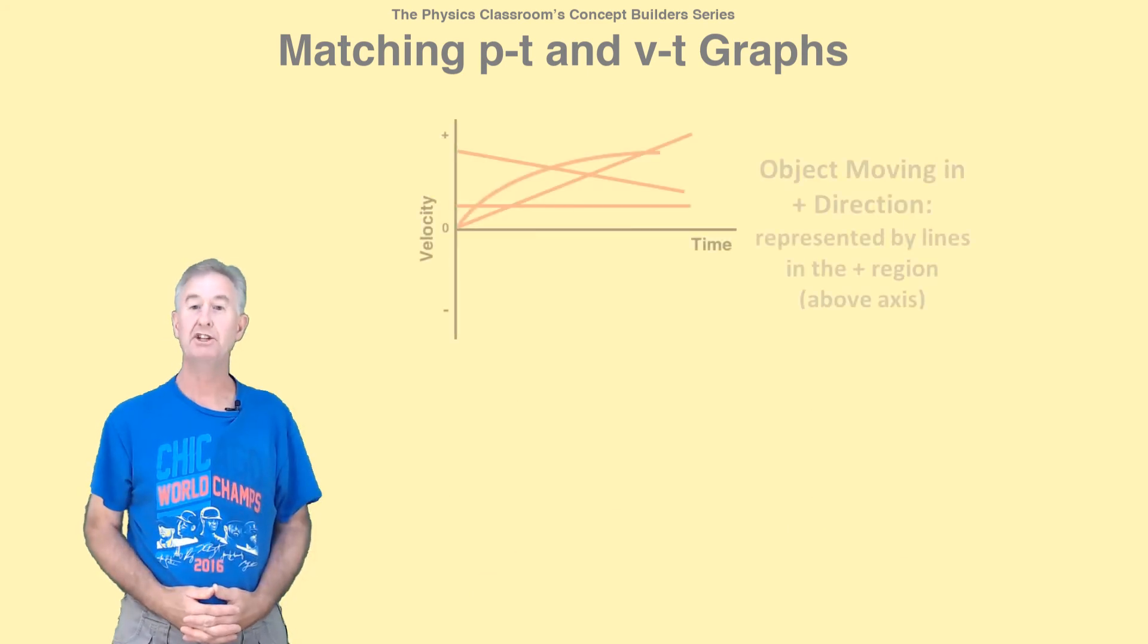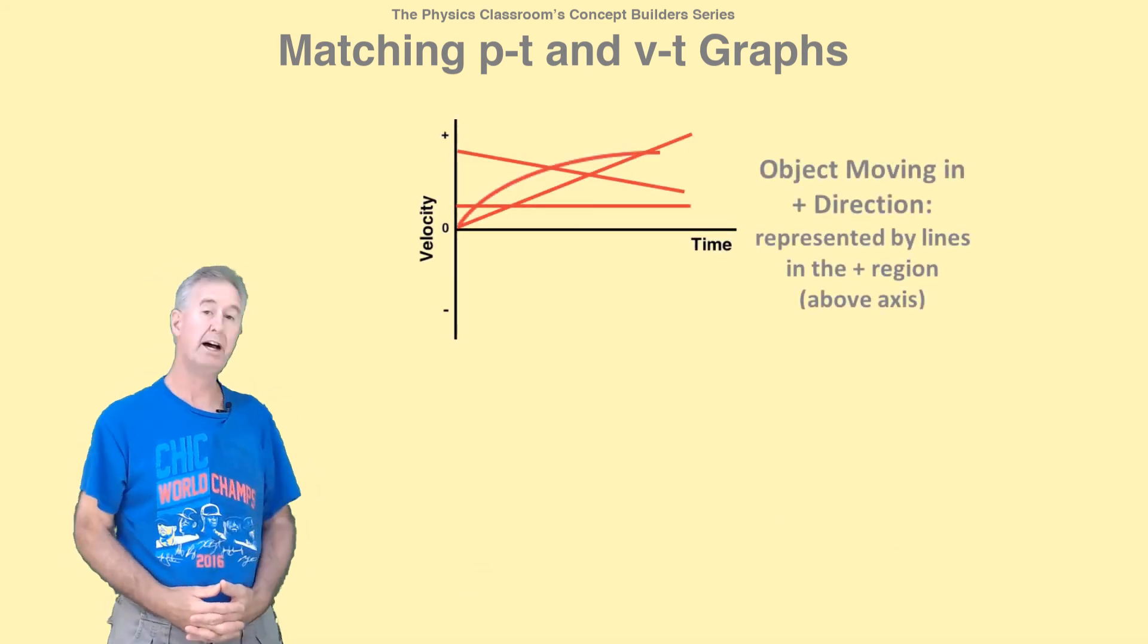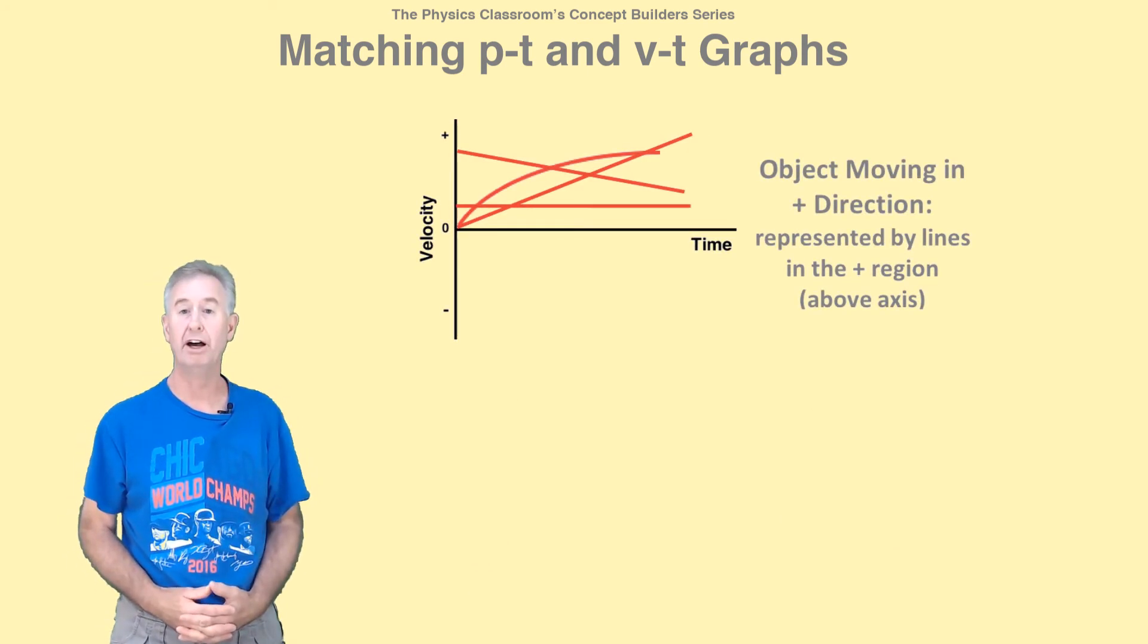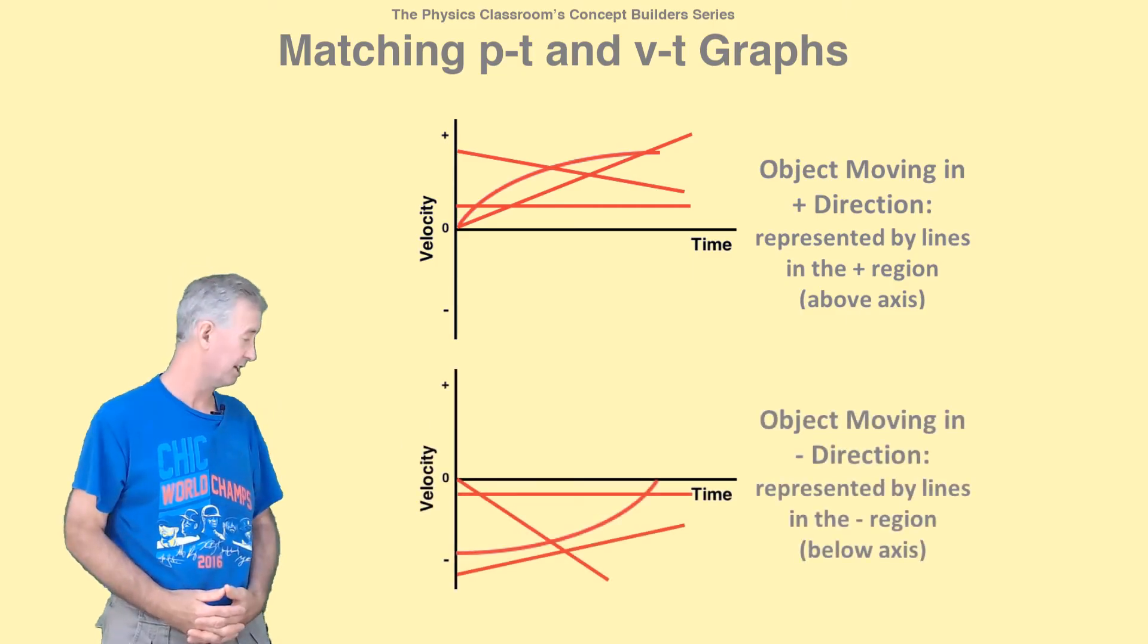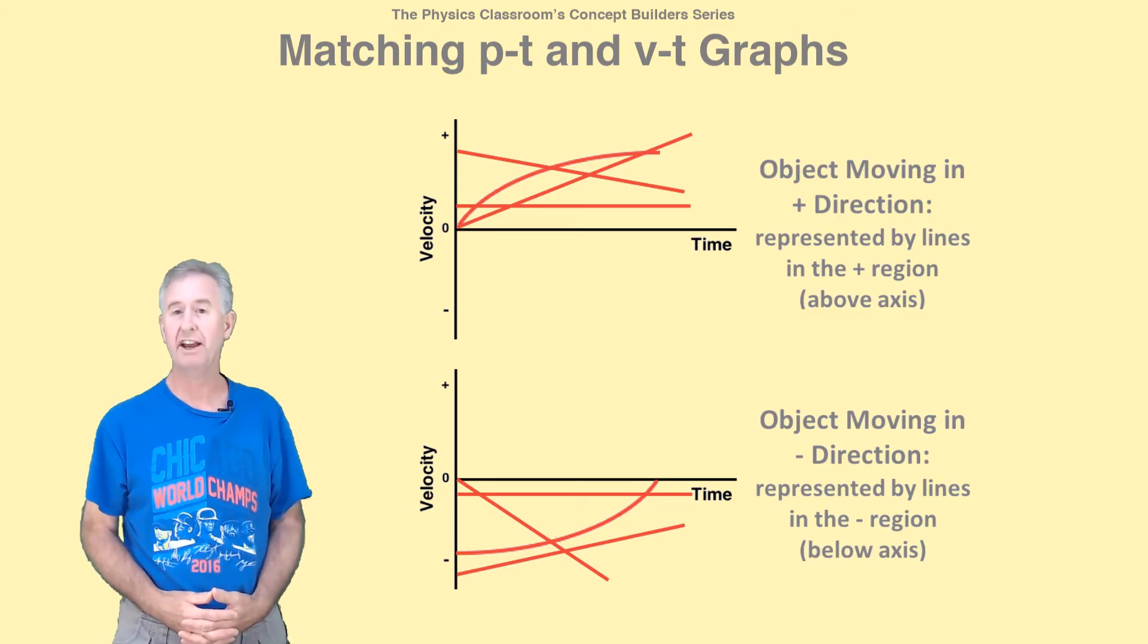Any straight or curved line in the positive region of the graph has a positive velocity. But a line in the negative region of the graph has a negative velocity.